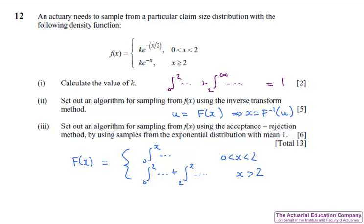Once you have this, rearranging it shouldn't be too much bother. Part three asks us to set out the algorithm for using the acceptance-rejection method, and we're told to use samples from an exponential distribution with mean 1. So this is our H of X.